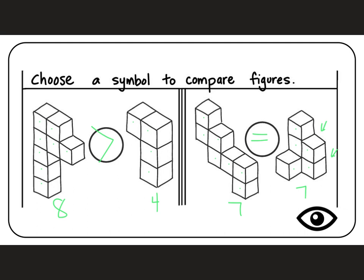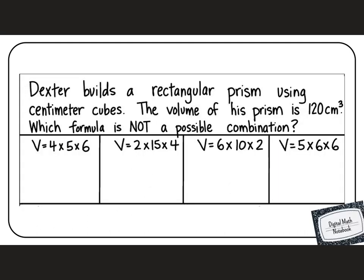Let's try some problems together. Alright guys, in your digital math notebook, you have this problem. Dexter builds a rectangular prism using centimeter cubes. The volume of his prism is 120 centimeters. Which formula is not a possible combination? Let's see if we can figure these out, compare along the way, and find the one that is not his formula.